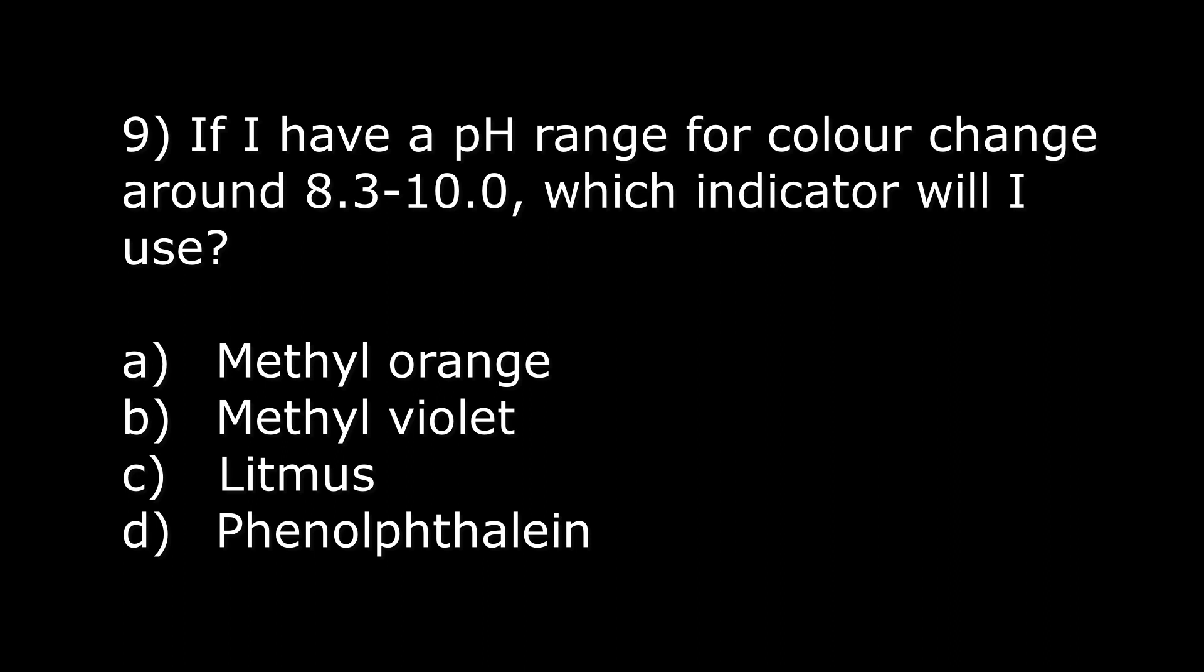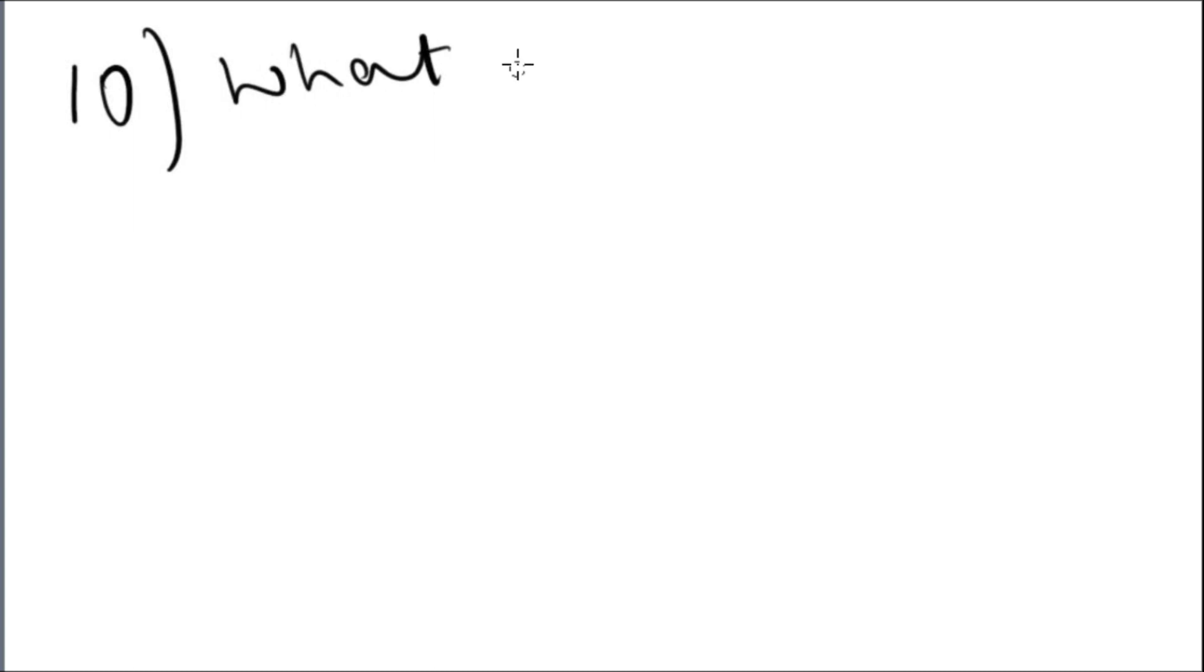Question number nine: if I have a pH range for color change around 8.3 to 10, which indicator will I use? a) methyl orange, b) methyl violet, c) litmus, or d) phenolphthalein. The answer is d, phenolphthalein.